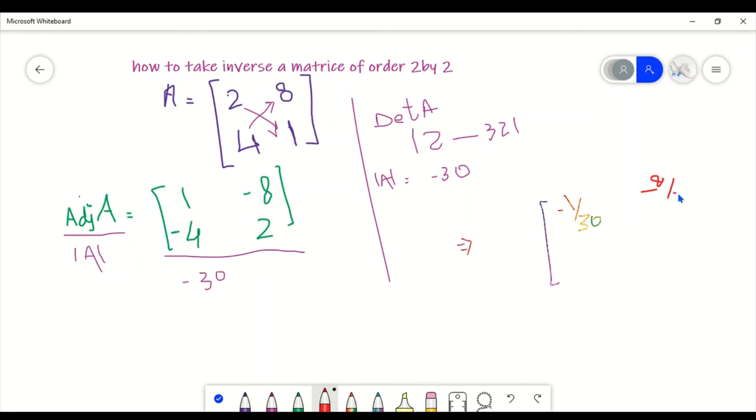Minus 4 over 30, minus 8 over minus 30. Now the signs cancel each other. And minus 4 divided by minus 30, the signs also cancel each other. Also there is a factor of 2 which is common in both.